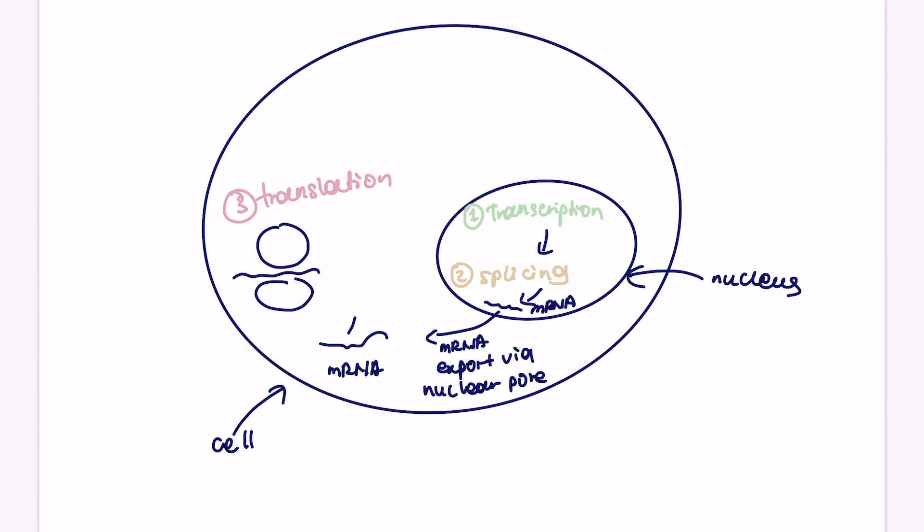And this is where the translation will occur. So we'll just draw mRNA between the two subunits of the ribosome. And here we go, this is the summary of all the processes and we'll cover translation in the next video.